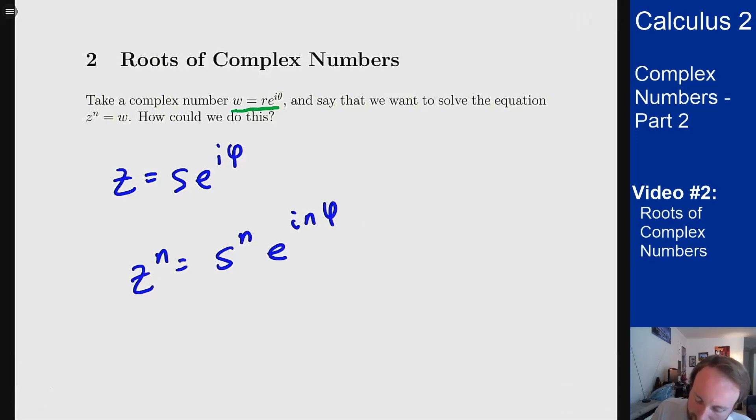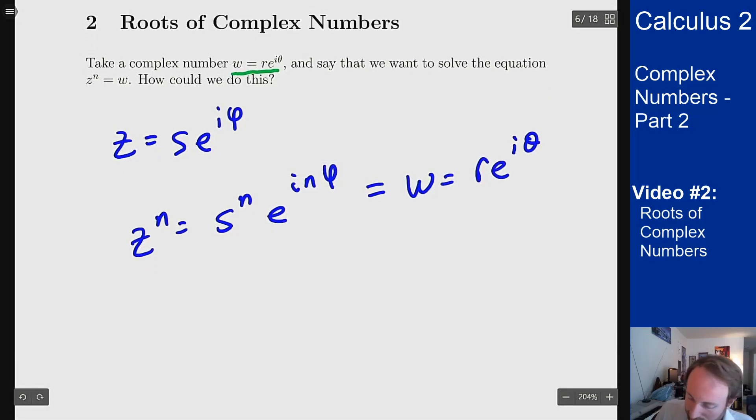If I want this to equal w which is r e to the i theta, this tells me a nice easy way to set this up. This means for these two things to be equal I would need to have s to the n equals r, an equation of real numbers we know how to solve, and n phi equals theta to match up the angles. This gives you a pretty straightforward way.